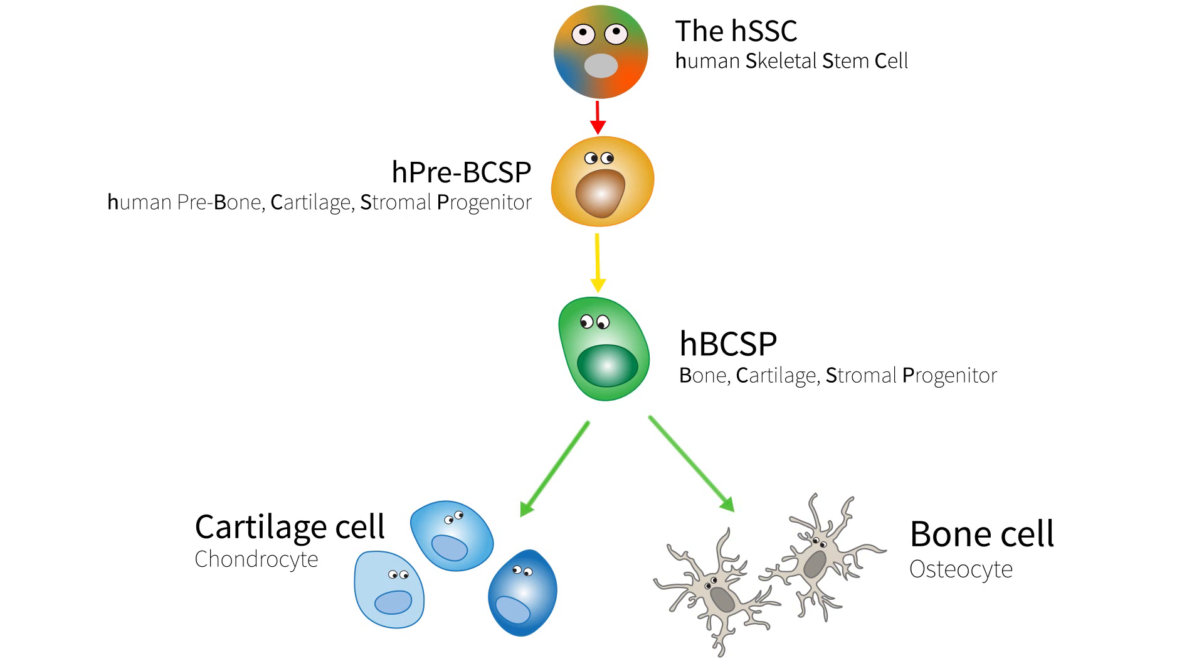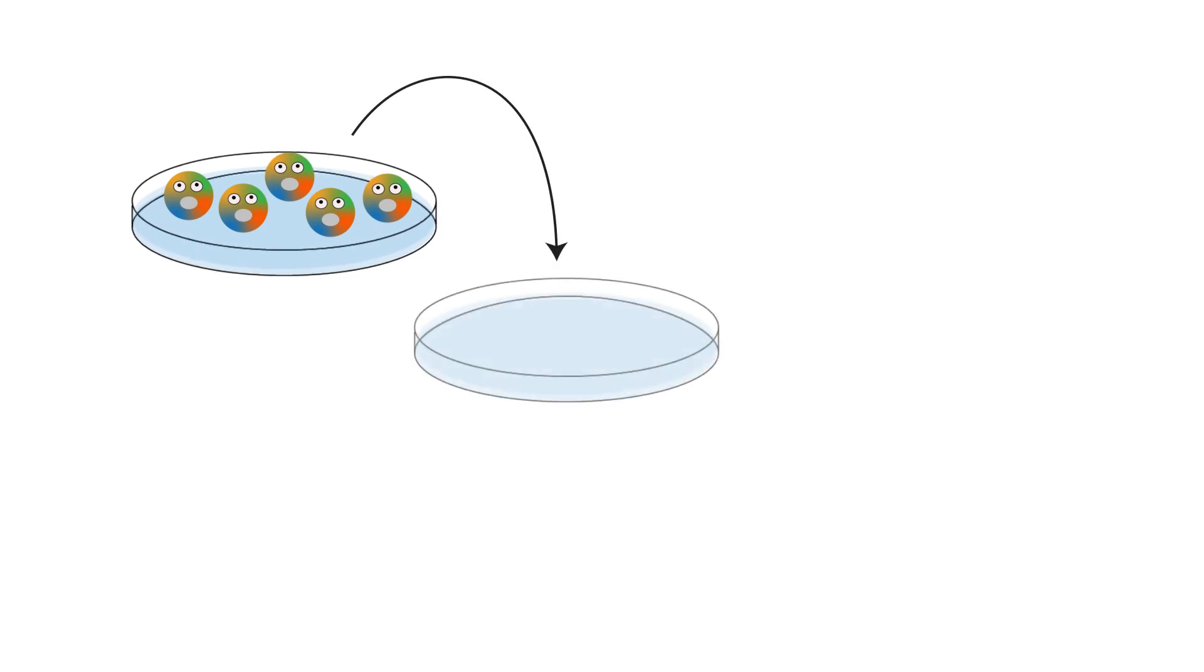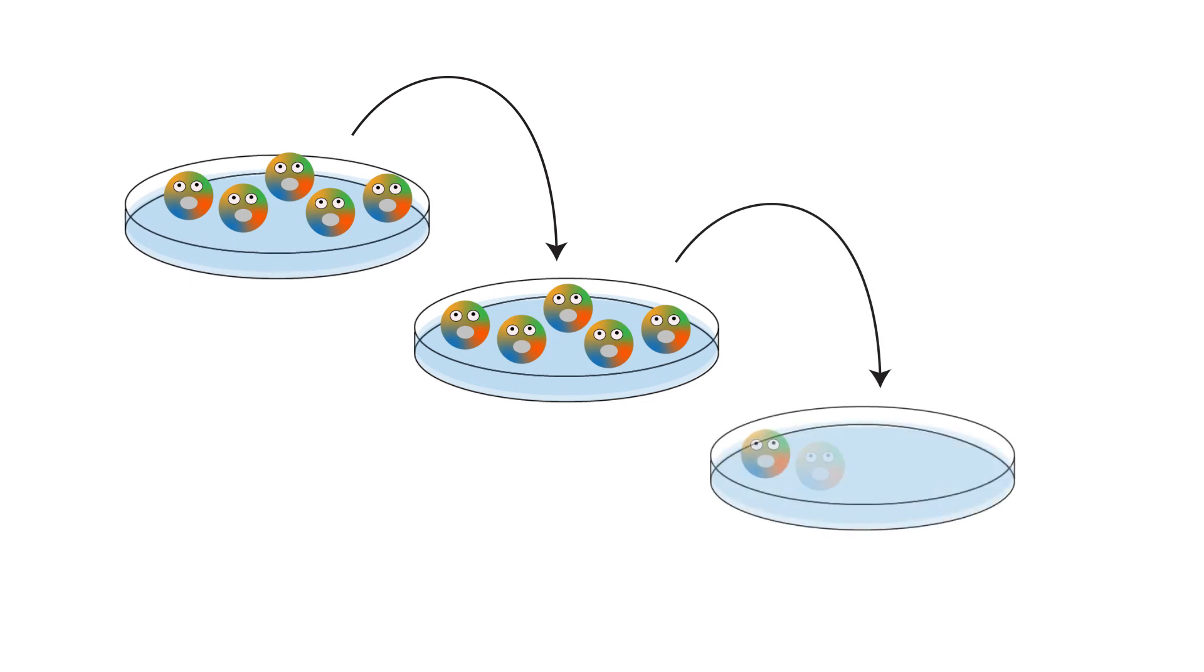The human skeletal stem cell can duplicate itself? Yes, if the skeletal stem cell is grown in a dish, it can replicate itself again and again and again. But that's in a dish. That doesn't mean it happens in living humans.